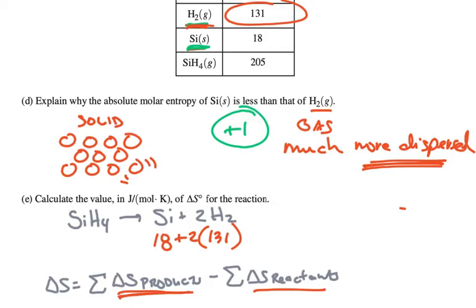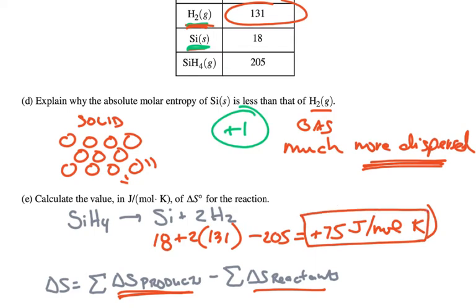Then it's going to say minus the SiH4, and that is 205. If we do that math we come up with a positive 75 joules per mole Kelvin. And that's our answer. When we get that answer, that is worth one point.